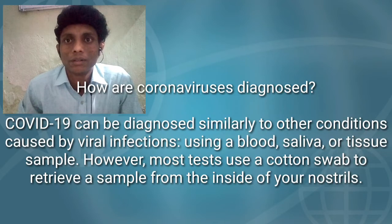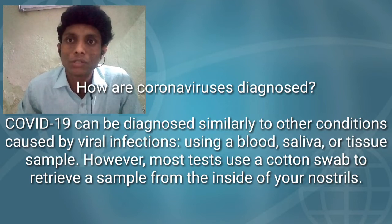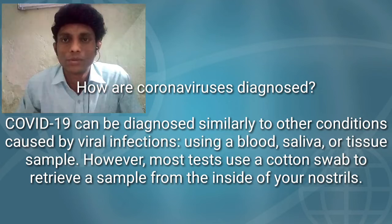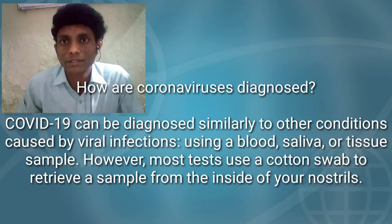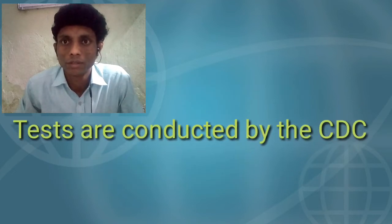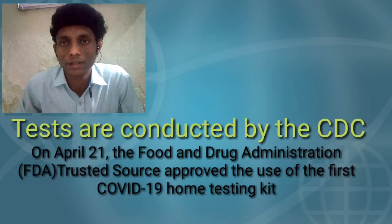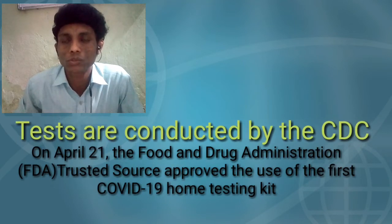How are coronaviruses diagnosed? COVID-19 can be diagnosed similarly to other conditions caused by viral infections, using a blood, saliva, or tissue sample. However, most tests use a cotton swab. Tests are conducted by the CDC.